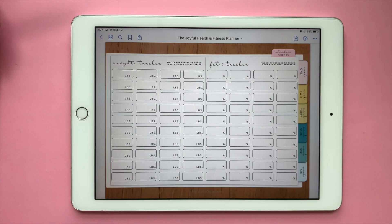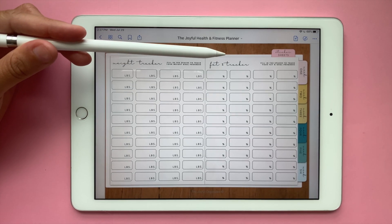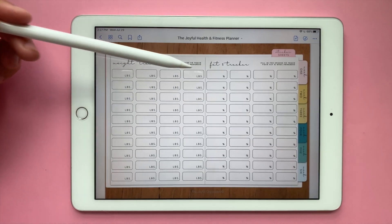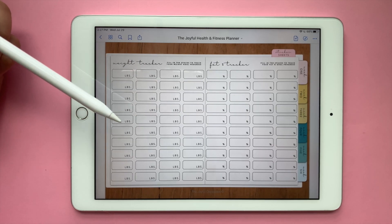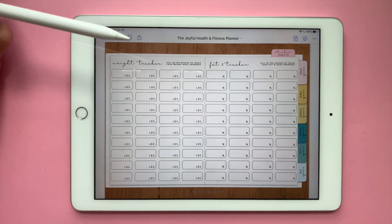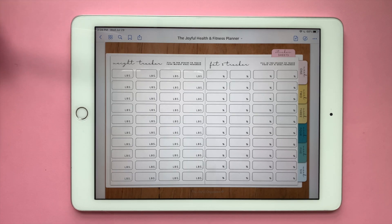Let's go to the next one. Here you have a weight tracker and a fat percentage tracker. That way you can keep track of your weight and fat percentage if that is something that you would like.